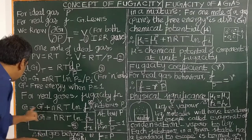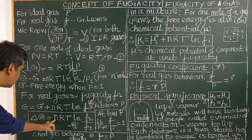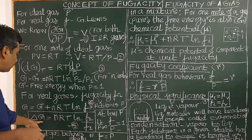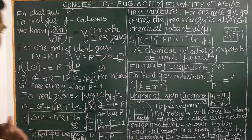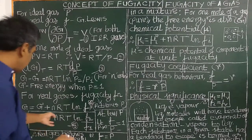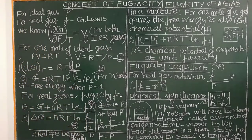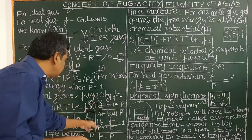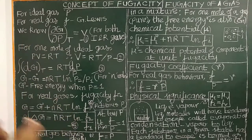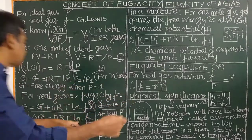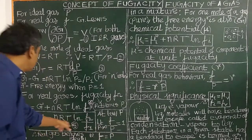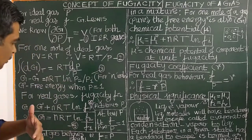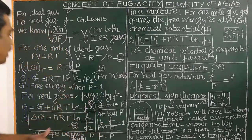Therefore, ΔG = G minus G° = RT · ln(f2/f1). Using this equation we can calculate the change in free energy, and we can also calculate the fugacity of the gaseous substance. If the gaseous system changes from state 1 to state 2, where fugacity changes from F1 to F2, we apply this equation to calculate the change in free energy.